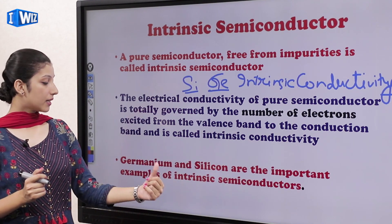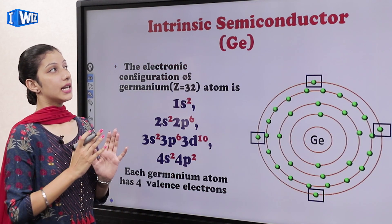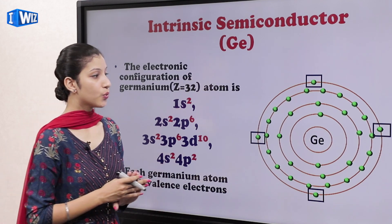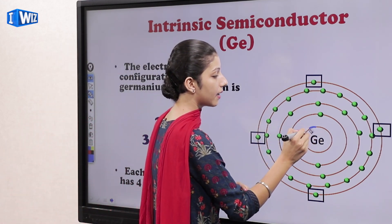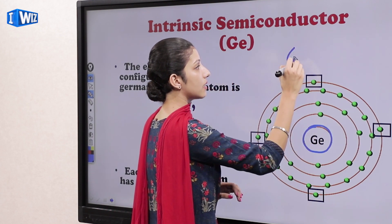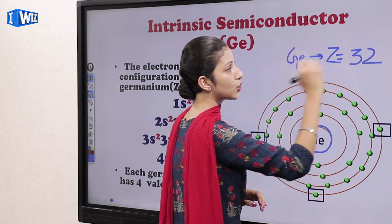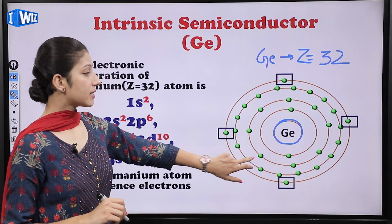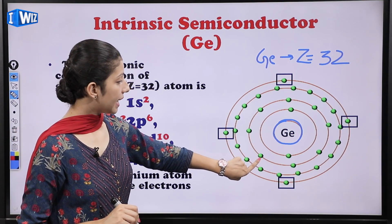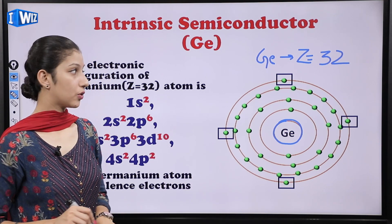Germanium and silicon are the important examples of intrinsic semiconductors. In the case of germanium, its atomic number is 32 — meaning the first orbit has 2 electrons, second has 8 electrons, third has 18 electrons, and then 4 electrons in the outermost orbit.